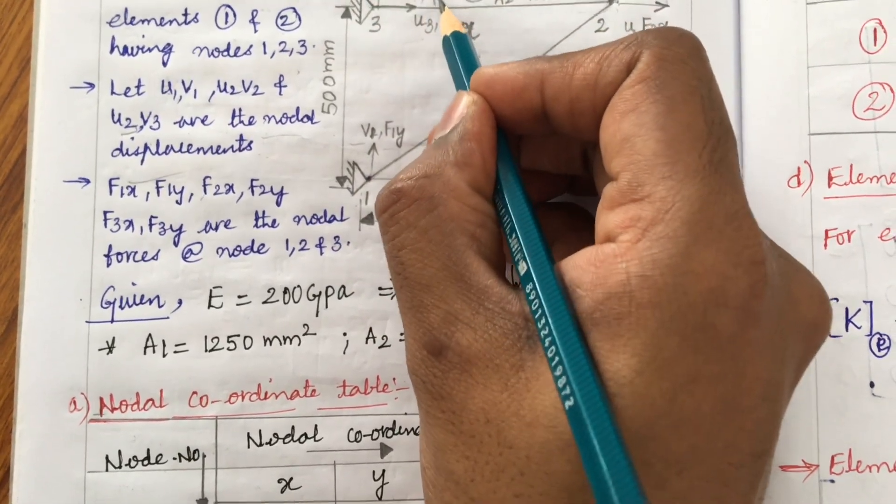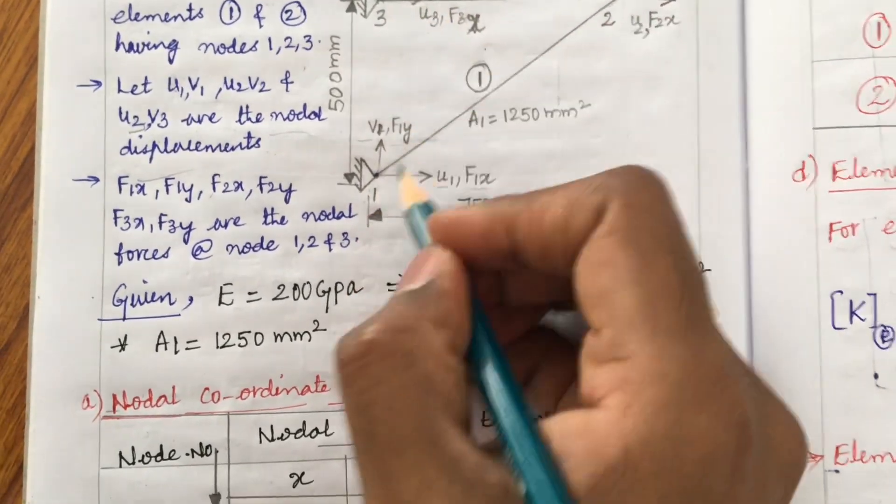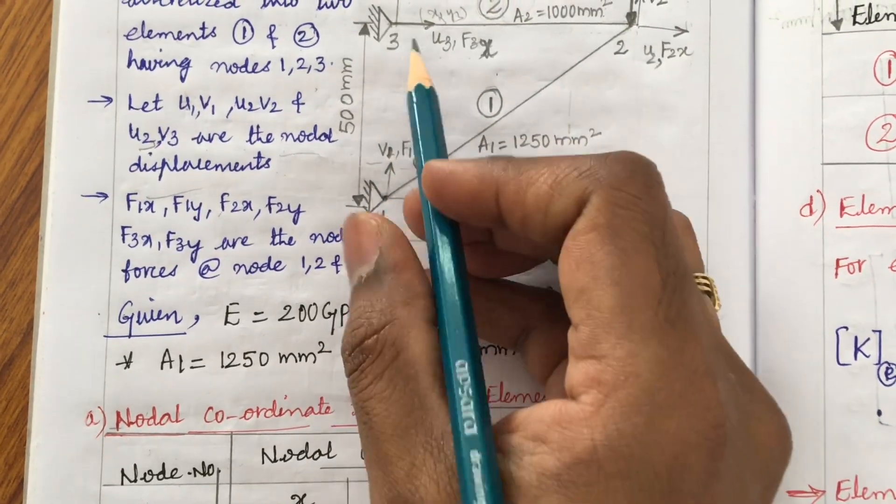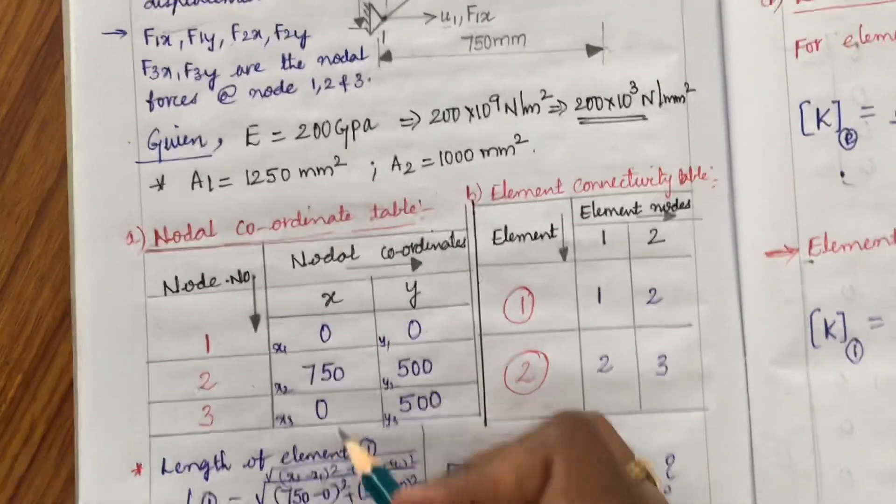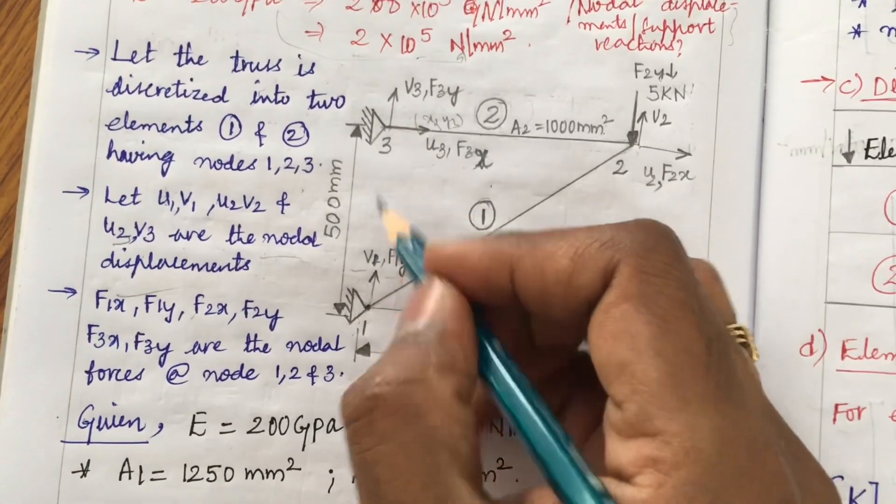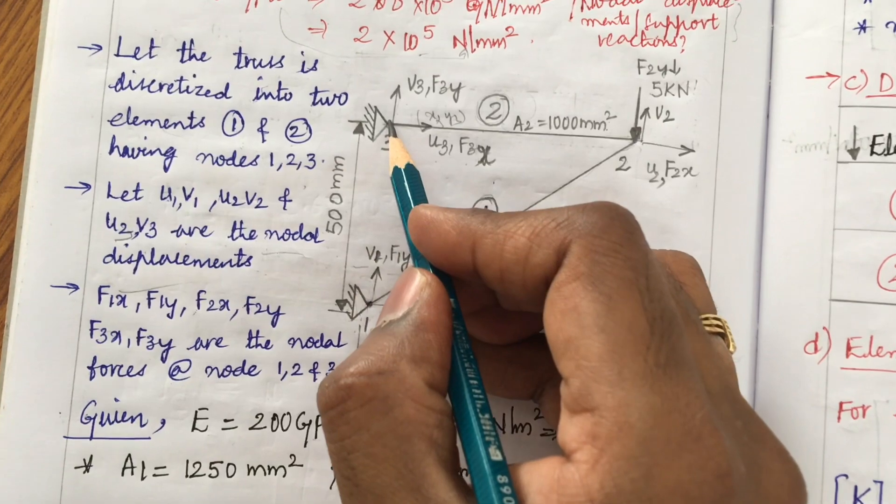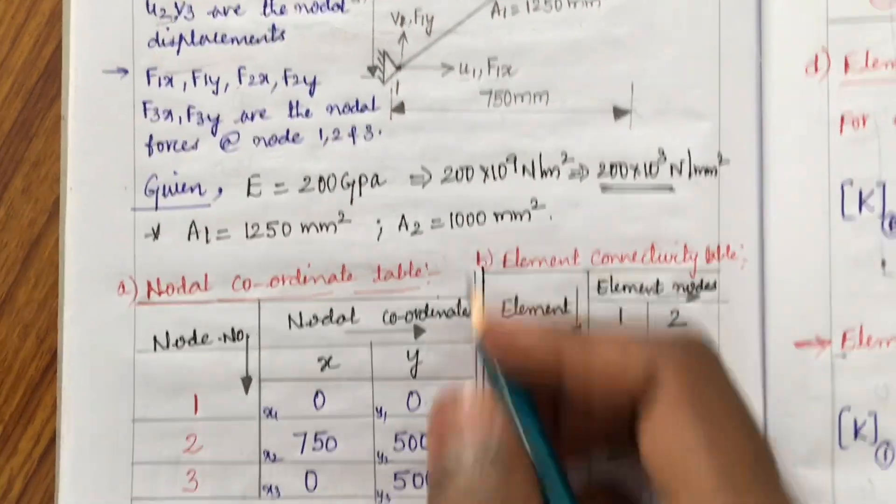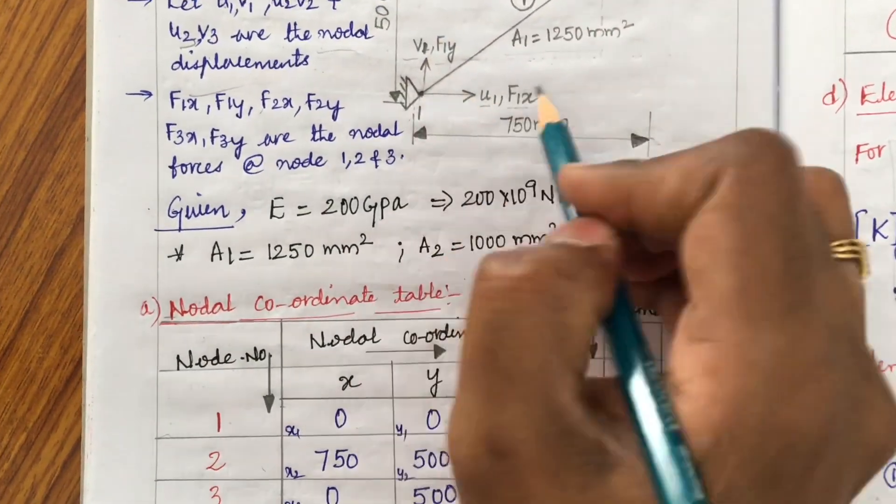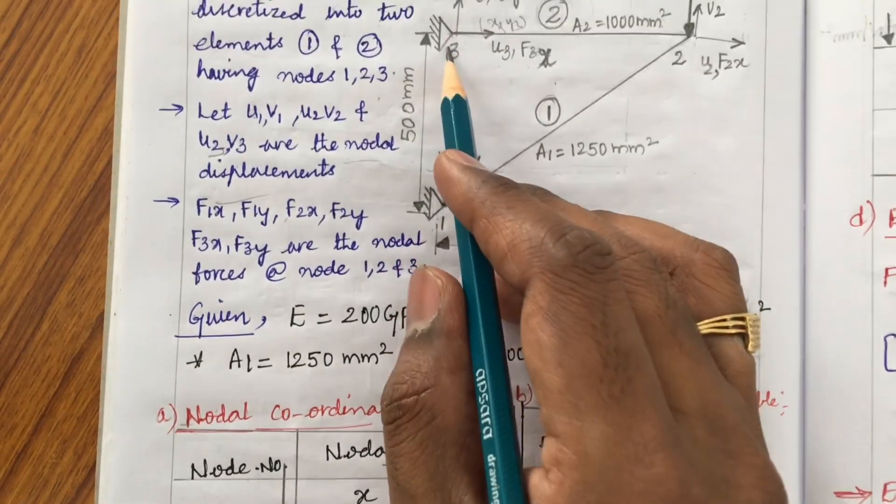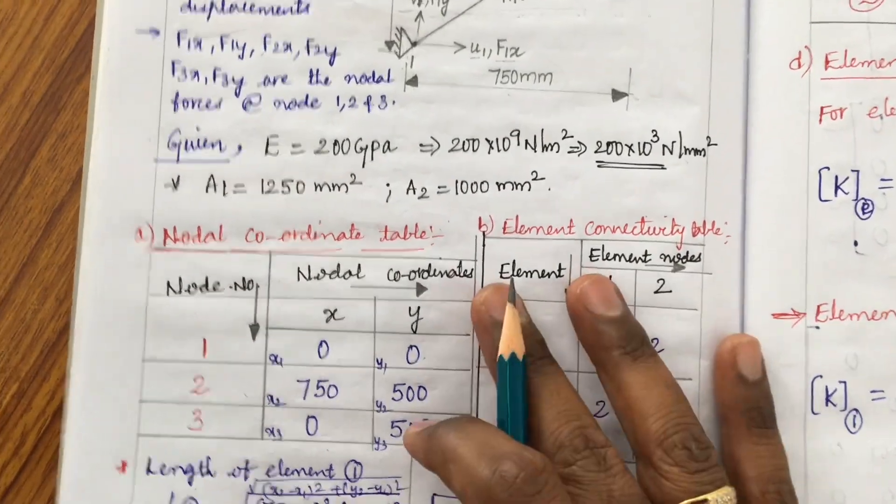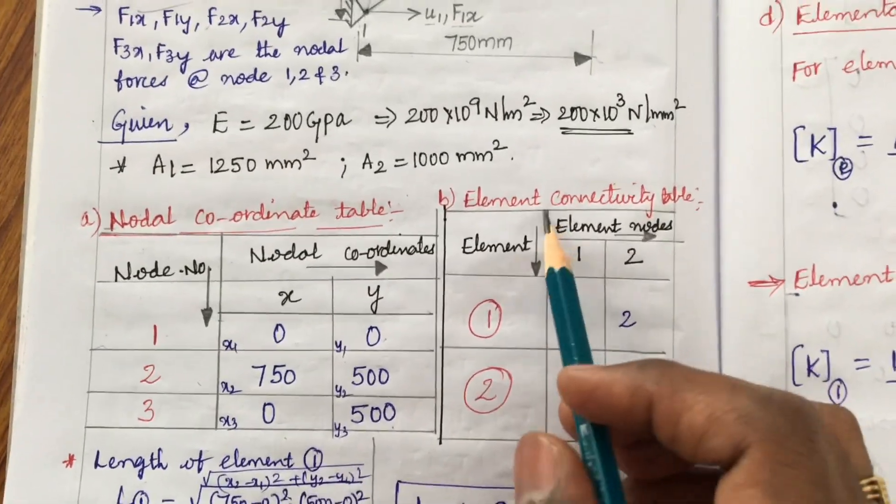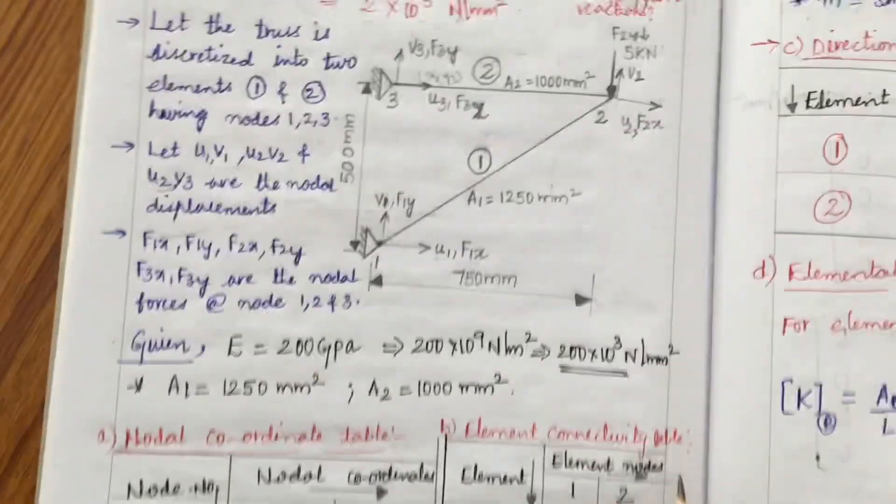Nodal connectivity table is all about node number and nodal coordinates x and y. I take this as the origin at node 1 along x and y. X origin is 0 and the y-coordinate is also 0. That is the reason x1, y1 are nothing but 0. Node 2: the x value is 750 and y value is 500.